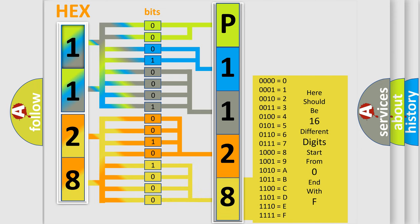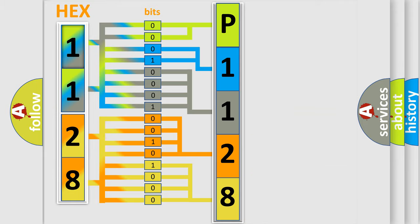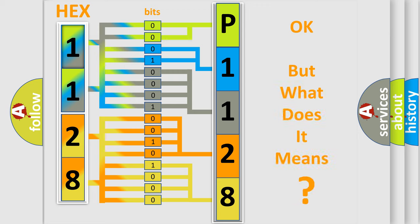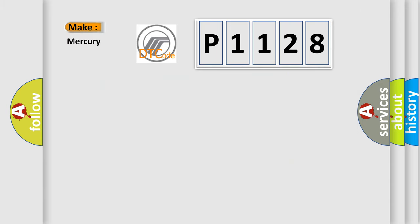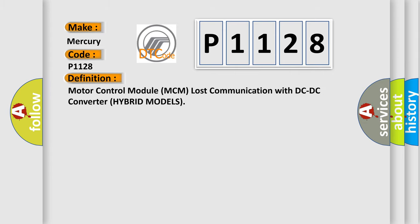We now know how the diagnostic tool translates received information into a more comprehensible format. The number itself does not make sense to us if we cannot assign meaning to what it actually expresses. So, what does the diagnostic trouble code P1128 interpret specifically for Mercury car manufacturers?